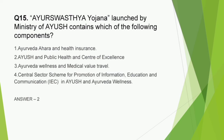Question number 15: Ayur Swasthya Yojana launched by Ministry of Ayush contains which of the following components? Ayur Swasthya Yojana comes under Central Sector Scheme and its key components are Ayush and Public Health, Ayush for Sports Medicine, and Upgradation of Facilities to Centre of Excellence.